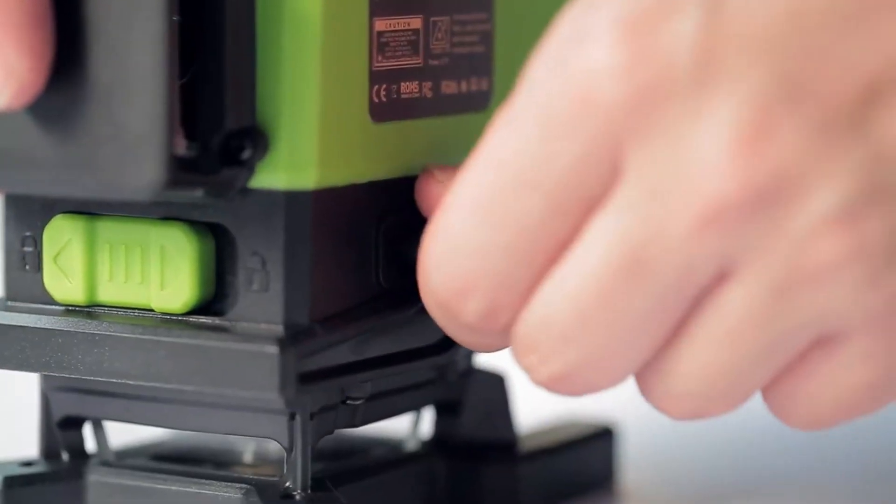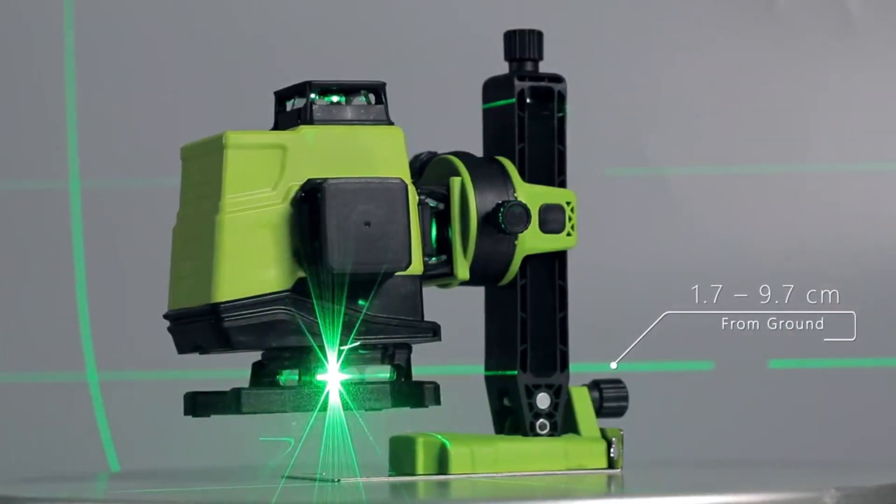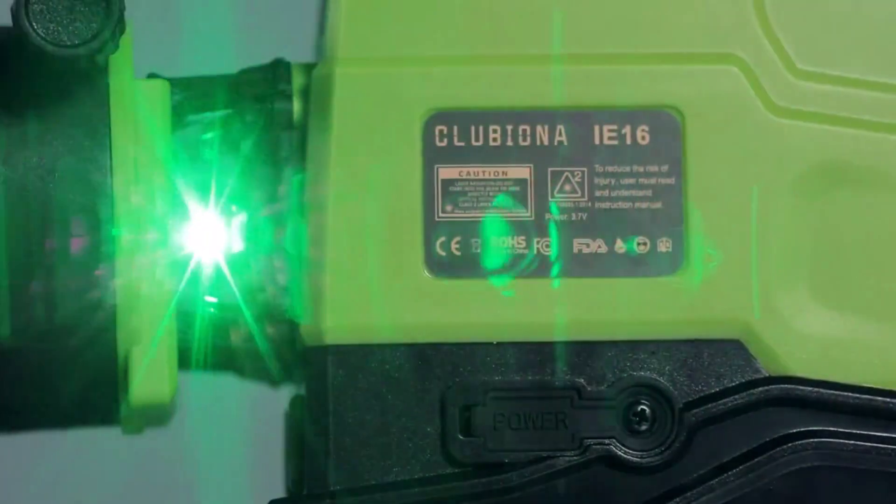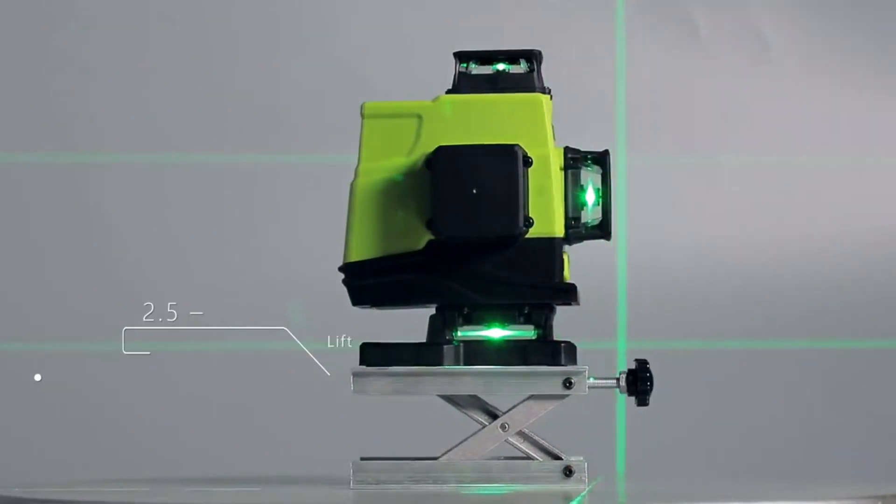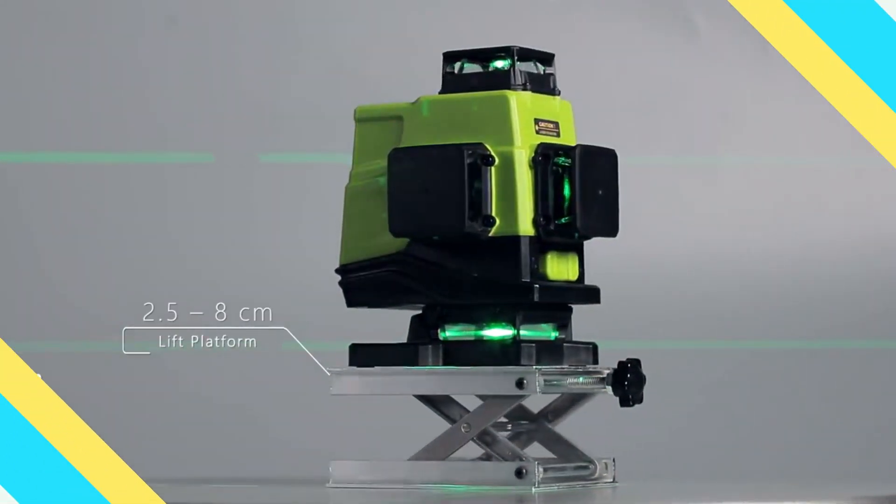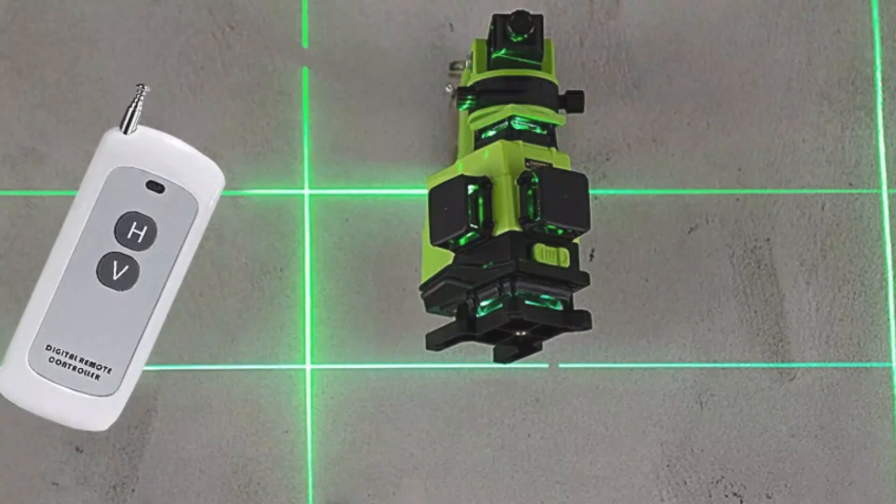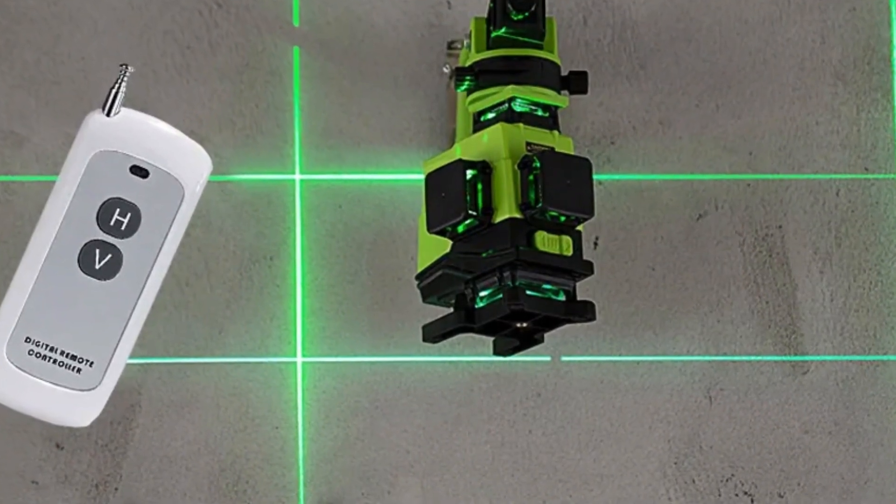It has an IP54 rating, making it waterproof and dustproof, and can withstand temperatures from minus 10 degrees centigrade to 50 degrees centigrade. The 3.7V 5000 mAh battery pack offers extended working hours, with a Type-C interface, ensuring long-lasting power.